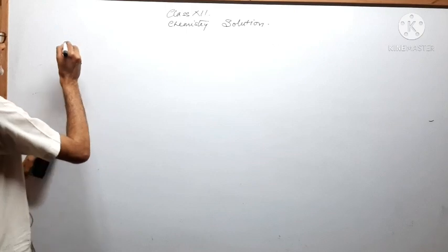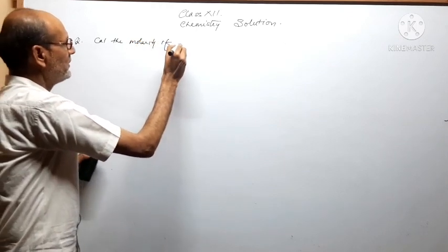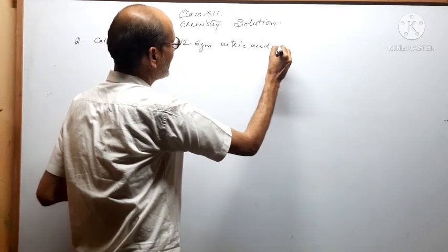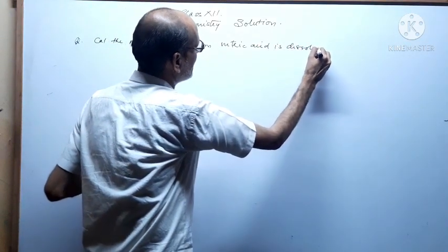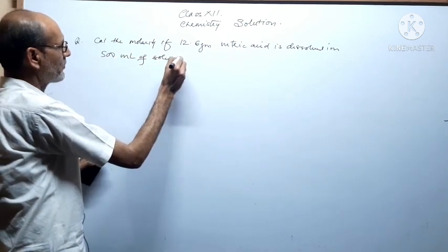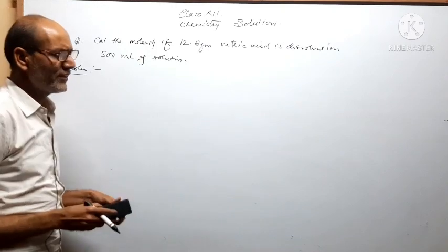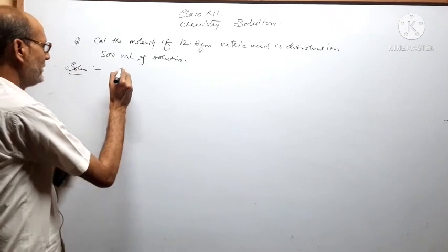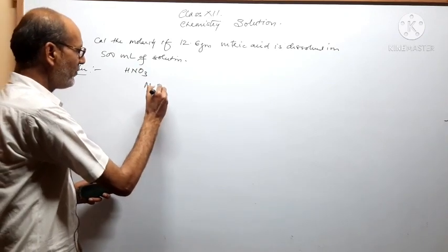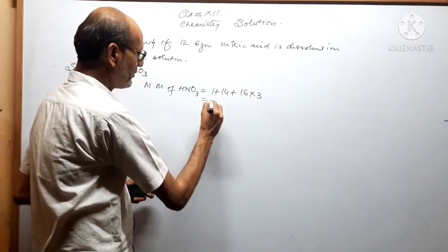Question: Calculate the molarity if 12.6 gram nitric acid is dissolved in 500 ml of solution. Solution: The formula of nitric acid is HNO₃. First calculate the molecular mass of HNO₃: 1 + 14 + 16×3 = 63. Now applying the formula M = W_B / (MM × V in liters).